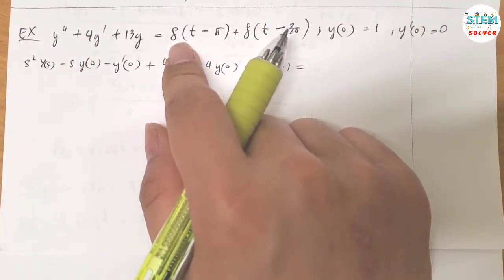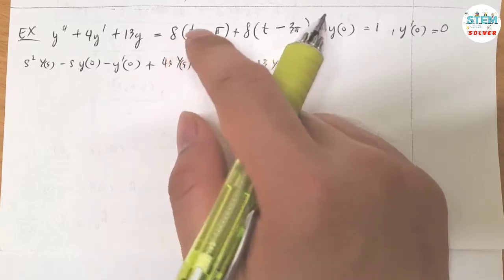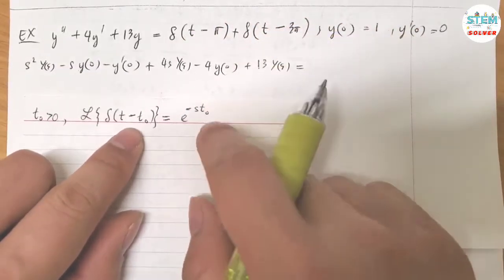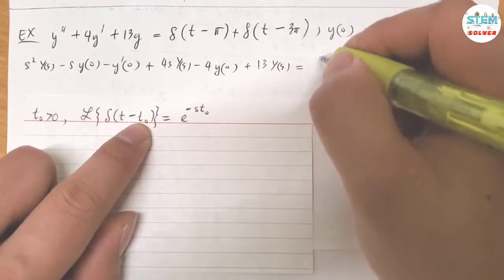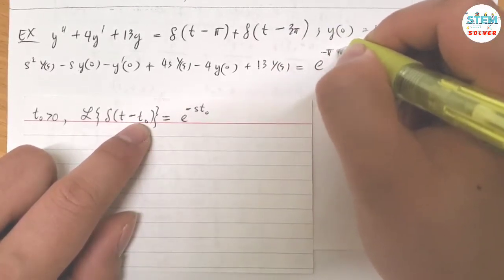This is a direct delta function and the Laplace transform of that one is equal to e to the negative S T naught. So whatever T naught is, you just plug it in. In this case, I have e to the negative pi S.